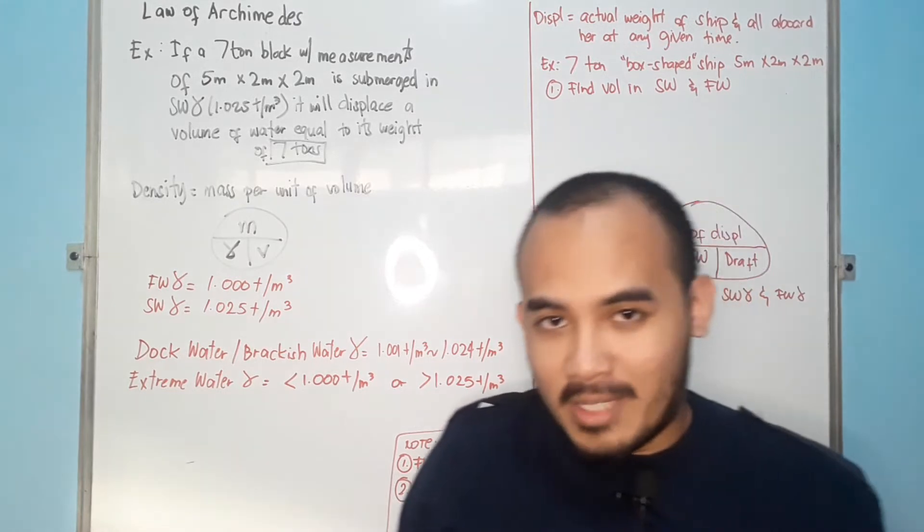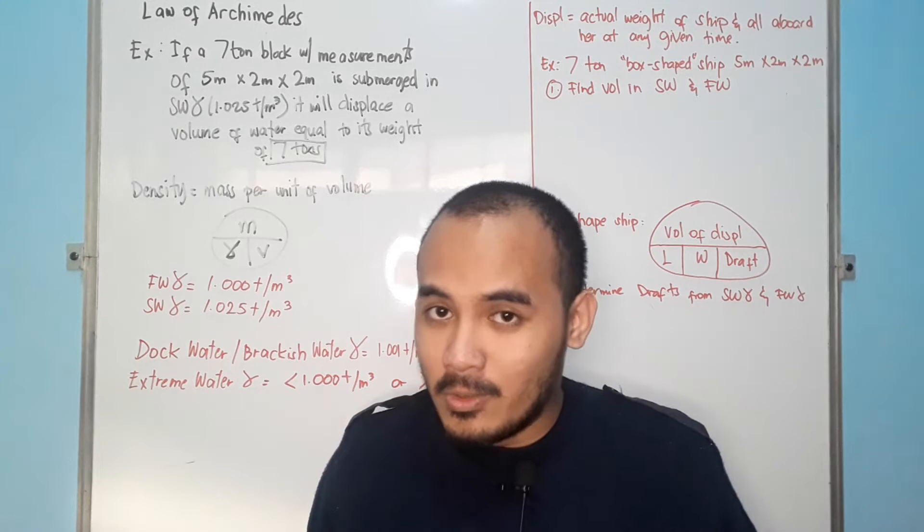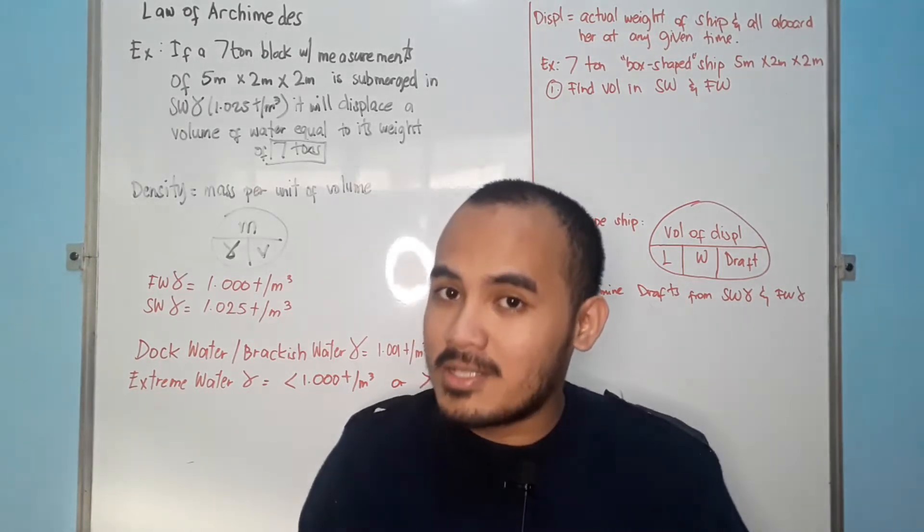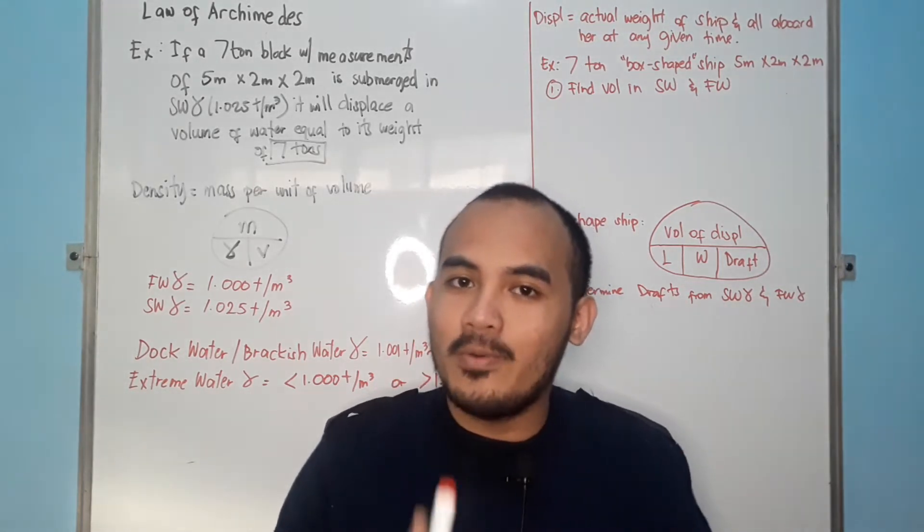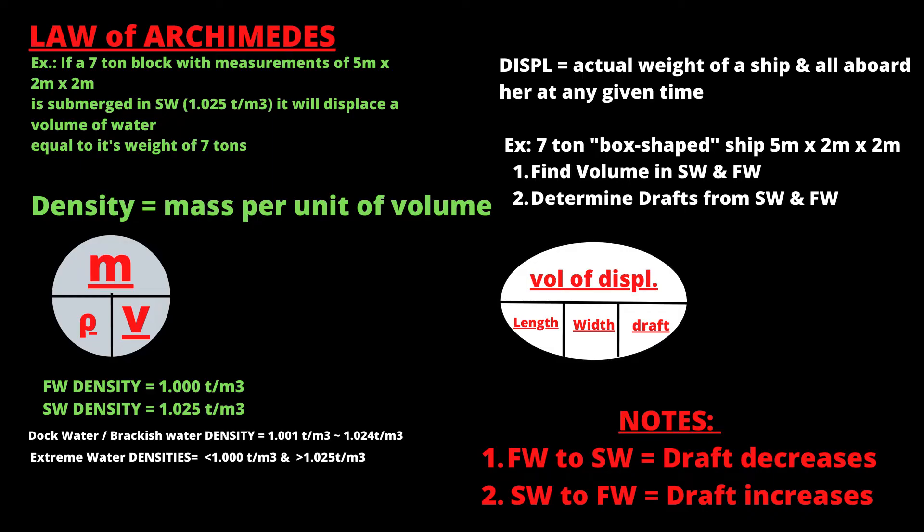Let's start with Law of Archimedes. What is Law of Archimedes? A body immersed in a liquid loses or suffers a loss of weight equal to the fluid it displaces. For example, you have a 7-ton block of an object with measurements of 5 meter by 2 meter by 2 meter. It's submerged in salt water, 1.025. 1.025 is your salt water density. It will displace a volume of water equal to its weight, which is 7 tons.